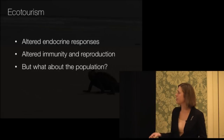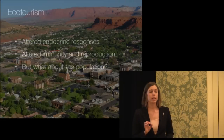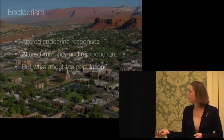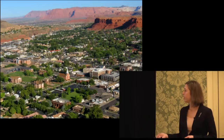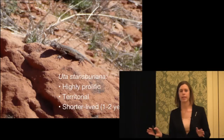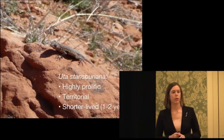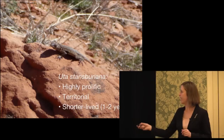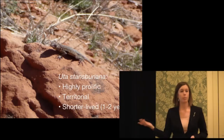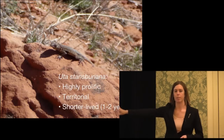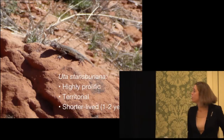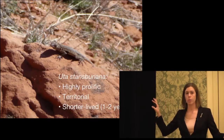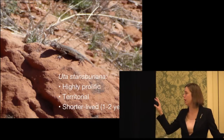This is St. George in southern Utah. And we're going to look at a seemingly different animal, but one that's actually very similar to the marine iguana in a few key ways — the side-blotched lizard. Like marine iguanas, these animals are highly prolific and also territorial, so I can repeatedly sample the same individuals. But they're shorter-lived — one to two years. So I can use the measures that we're taking and relate them to the lifetime survival and reproductive success over a much shorter time frame. They're also found in this urban environment, so I'm looking at a very different type of human disturbance than in the Galapagos.